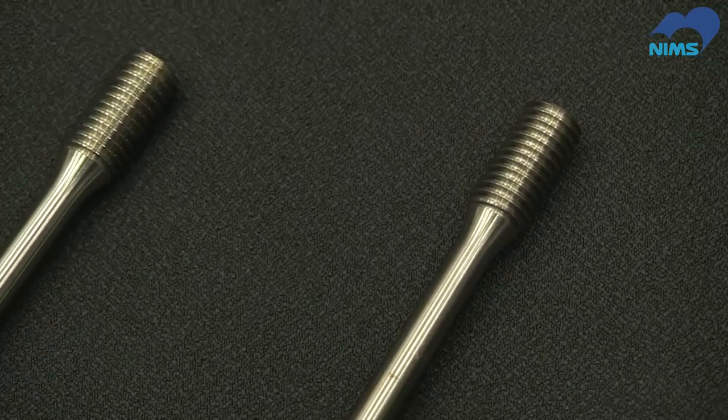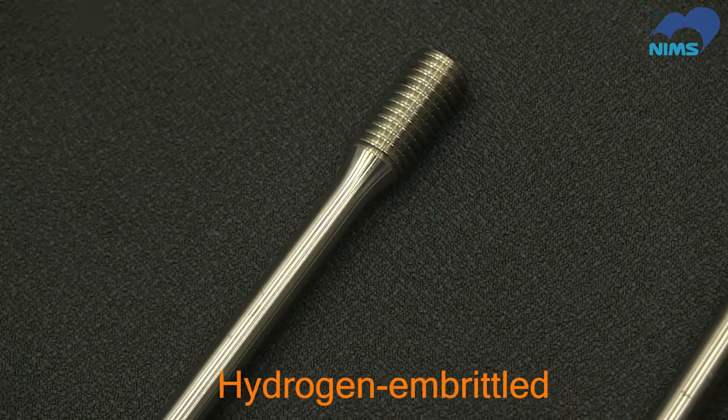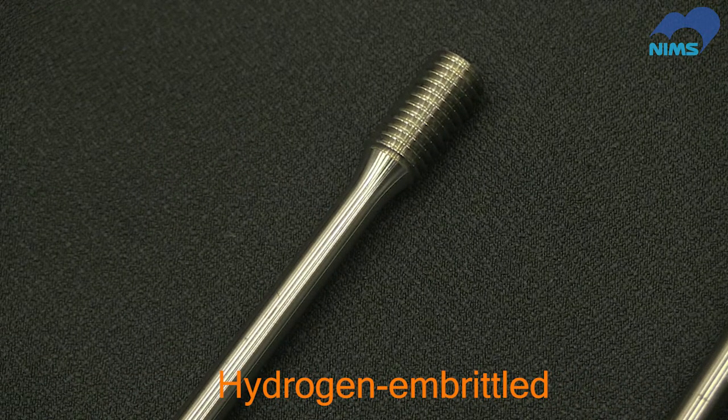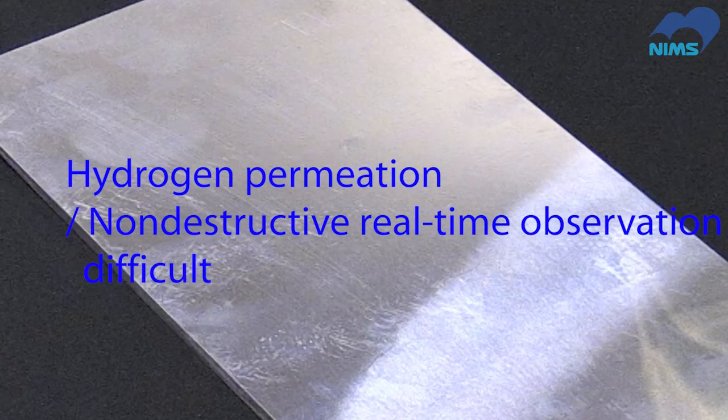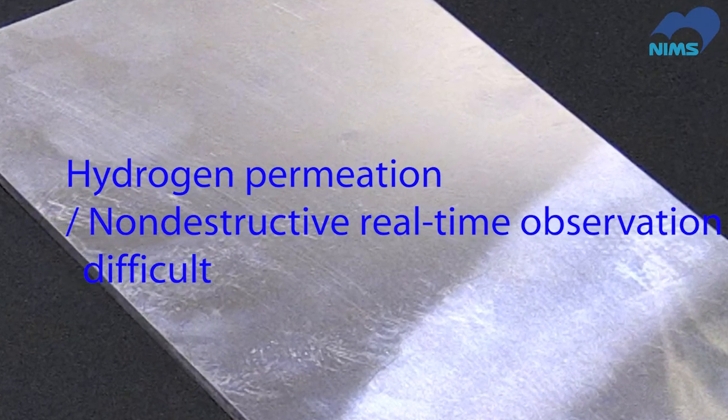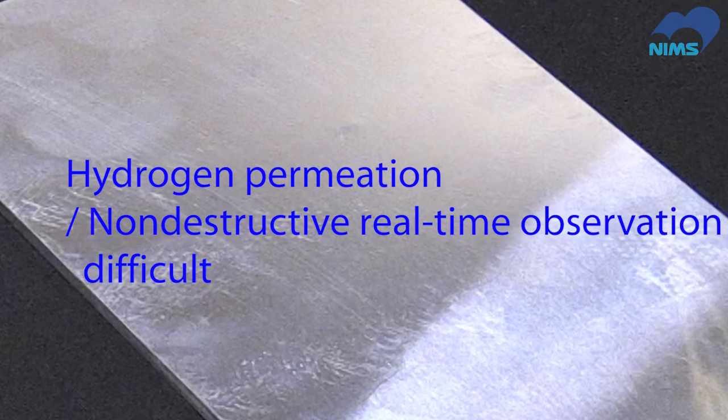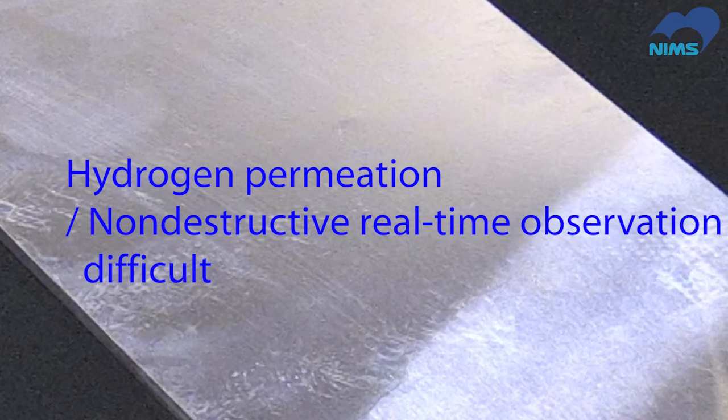Thus, it's a dangerous phenomenon, especially for pipelines, which could be compromised invisibly. No effective means of controlling hydrogen embrittlement exists, because it's difficult to know where and to what extent hydrogen has permeated a metal.